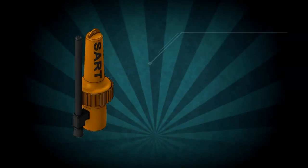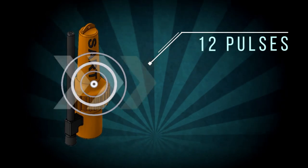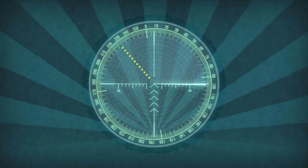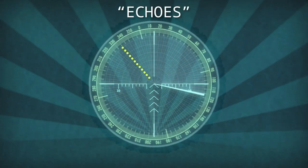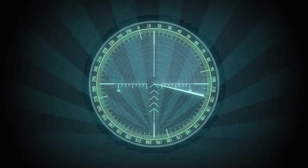If the SART detects a signal, it immediately transmits 12 pulses on the same frequency. This signal is seen by the radar as echoes and will be displayed on the screen as a series of 12 dots with a gap of 0.6 miles between them.